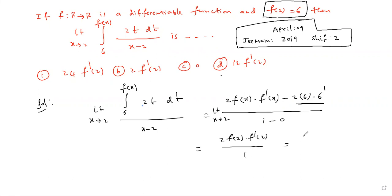So f of 2 given as 6, simply substitute: 2 into 6 f dash 2, which equals 12 into f dash 2. And that's the solution within one minute. Option D is correct.